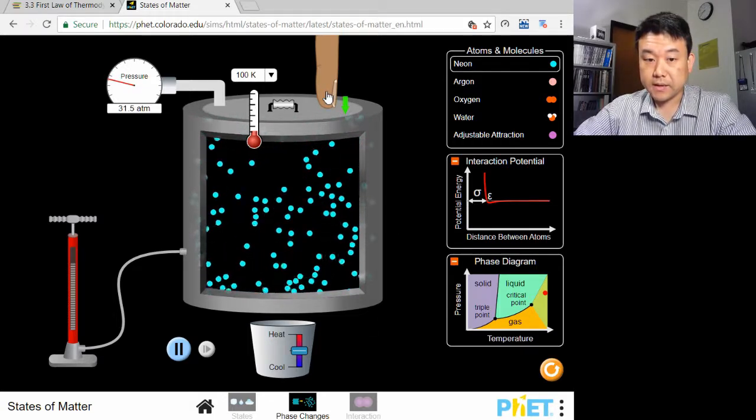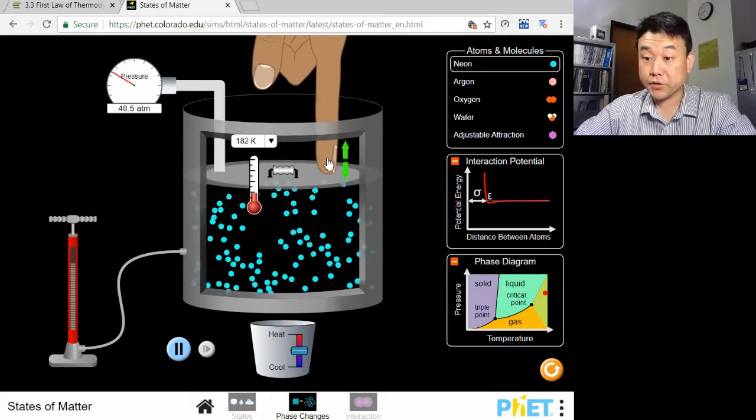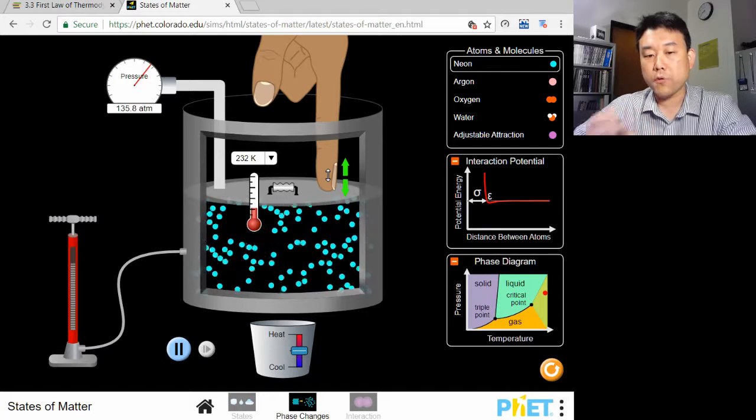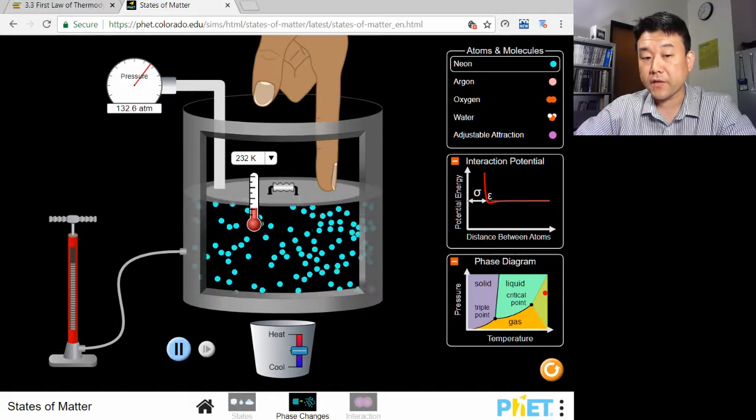Here's neon gas at the temperature of 100 Kelvin. As you can see, when I compress this gas, you see the temperature increasing. This is all what we are talking about earlier.